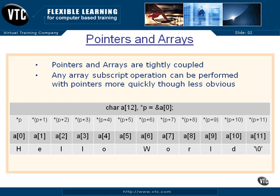Let's take a couple of minutes and talk about pointers and arrays. Remember that an array is an assembly of all the same type of data — all characters, all integers, all longs. No other types can get slipped in. Here we have an example of a character array that is 12 positions long, 0 through 11 — 12 characters.